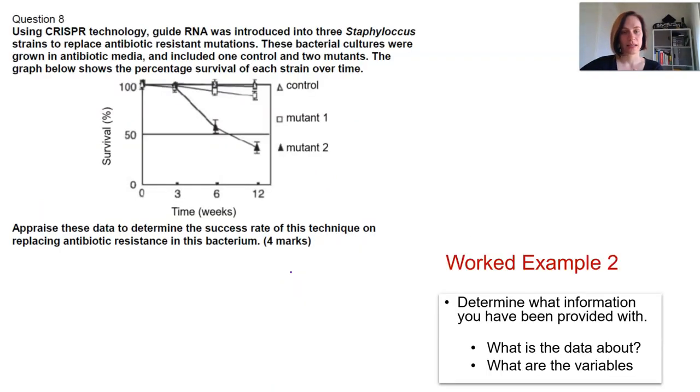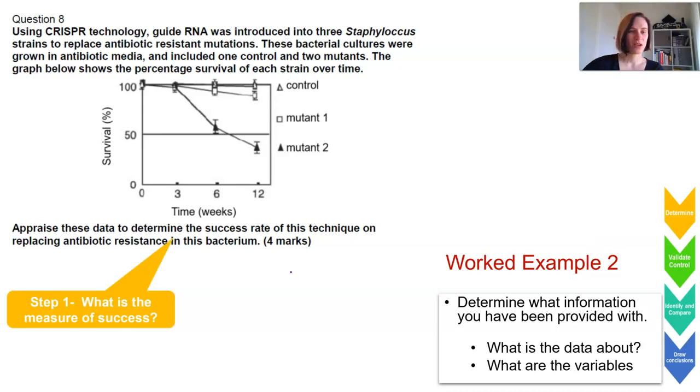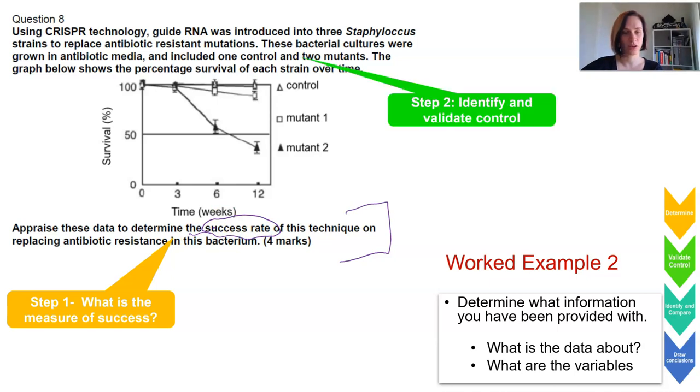So another worked example here. Again, determine what the information was that you've been provided and what are the variables. Think about stepping yourself through each of these steps and say, okay, it's got no scaffolding but I know I can work through this. So what is the measure of success? It says determine the success rate. I've got to think about that first. I've got to then validate my controls. Now up here in the stem it says it's included a control and two mutants, so they're probably my test samples as well.